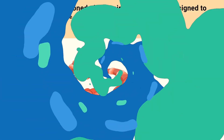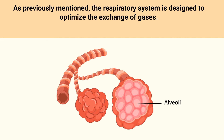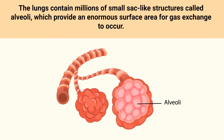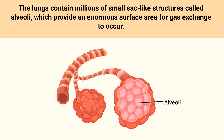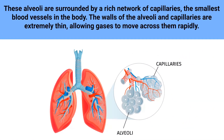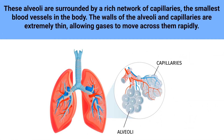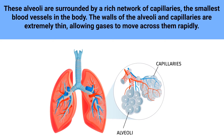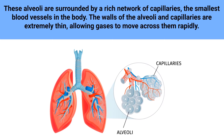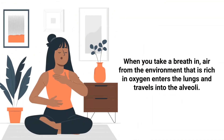The respiratory system is designed to optimize the exchange of gases. The lungs contain millions of small sac-like structures called alveoli, which provide an enormous surface area for gas exchange to occur. These alveoli are surrounded by a rich network of capillaries, the smallest blood vessels in the body. The walls of the alveoli and capillaries are extremely thin, allowing gases to move across them rapidly.